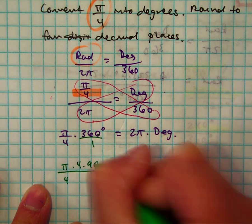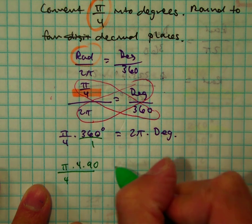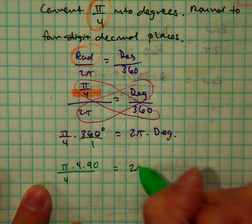I'm probably going to use 4 and 90. Do you guys see that? And I have 2π times degrees.